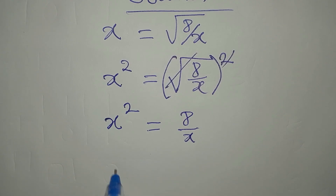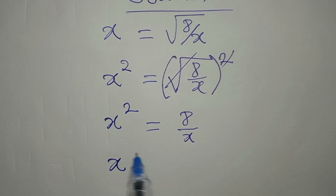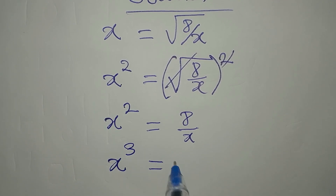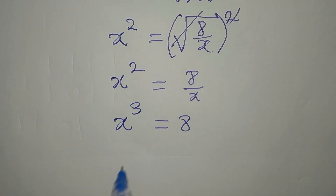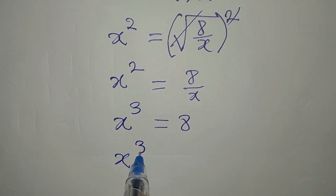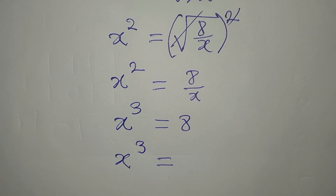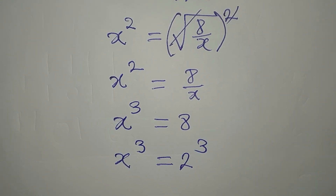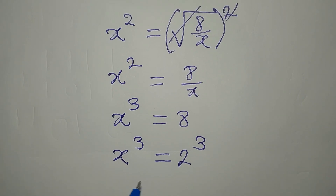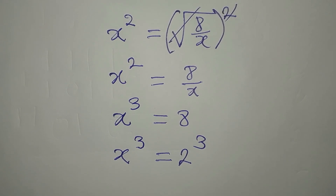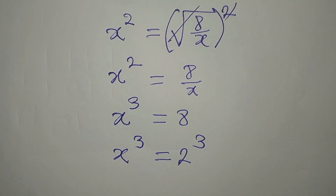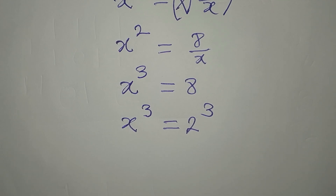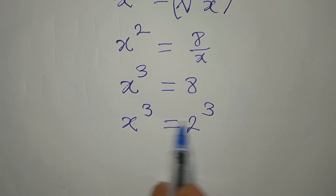If you cross multiply, you're going to have x to the power of 3 equals 8. And what is 8? Your 8 here is the same thing as 2 to the power of 3. Now if you solve for just one solution, x is simply 2. But if you solve it completely, you're supposed to get three solutions. Let's see how we get the three solutions.